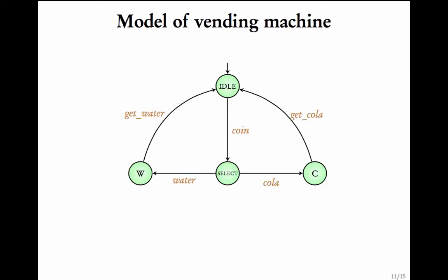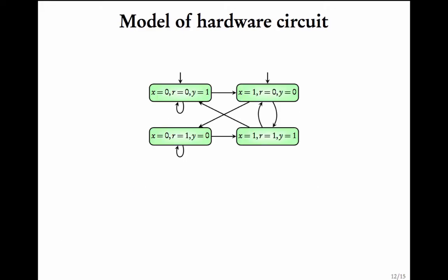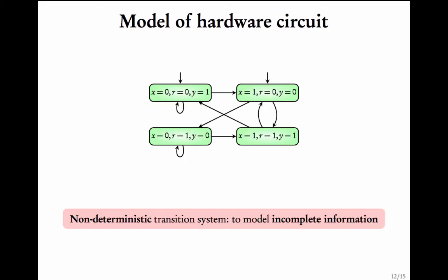The transition system modeling the vending machine is also deterministic — there is a single initial state and every state has a unique transition on an action. What about the hardware circuit? There are multiple initial states and multiple transitions from a state on an action, so this is a non-deterministic transition system. We used non-determinism because we did not know what the next value of X would be. Such incomplete information can be modeled using non-determinism.